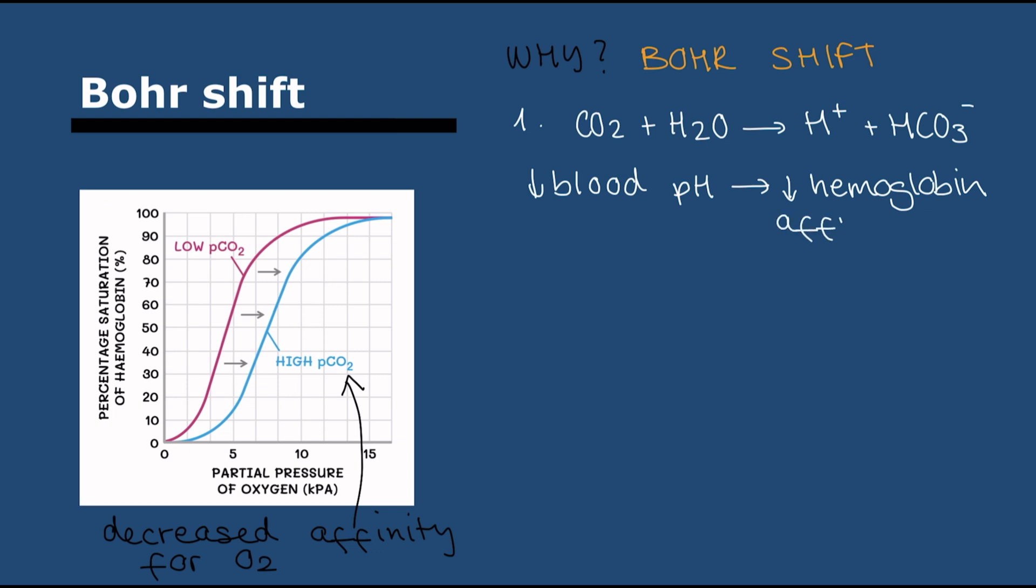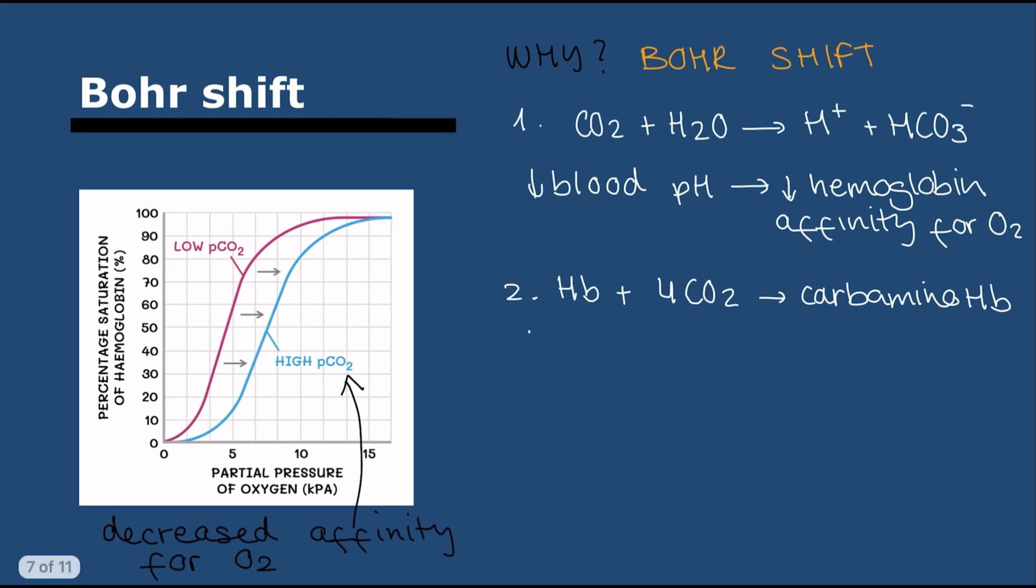How does this happen? It's two things. First, when CO2 is mixed with water, it produces protons and HCO3, which lowers blood pH, and lower blood pH reduces hemoglobin's affinity for oxygen. Second, CO2 can interact with the sites on hemoglobin that bind to oxygen, making carbaminohemoglobin, which has lower affinity for oxygen.